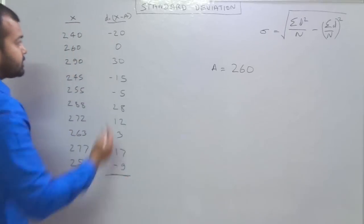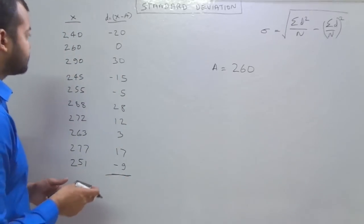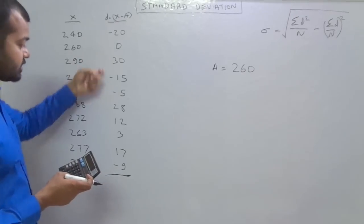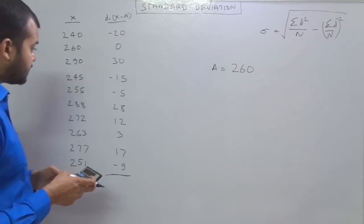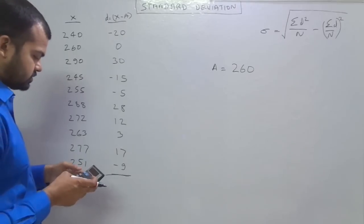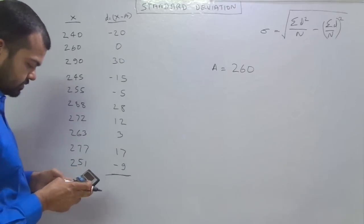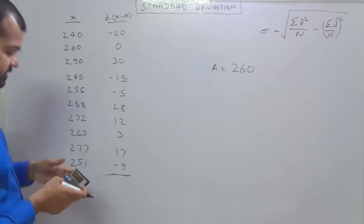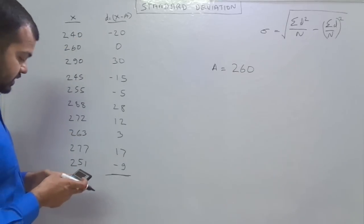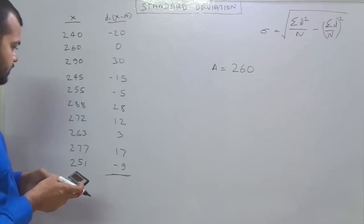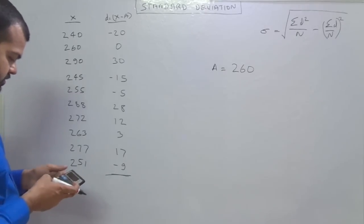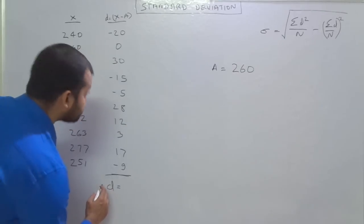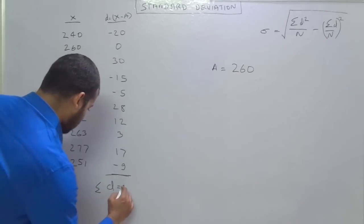Now you have to obtain the total of this figure. So first we will add the positive values. That is 30, 28, 12, 3, 70. Then we deduct the negative values. That is minus 20, minus 15, minus 5 and last one is minus 9. So D is equals to 42.